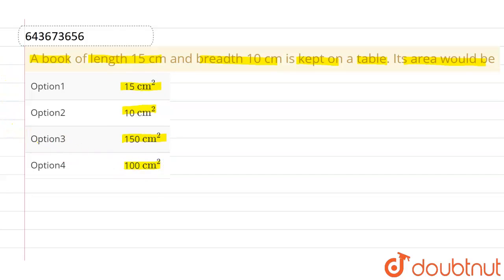First thing we know that a book looks like a rectangle. So let this be the book. This distance is the breadth, which is given as 10 centimeter, and this is its length which is given as 15 centimeter.